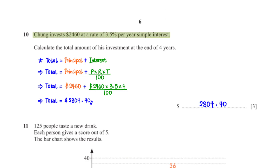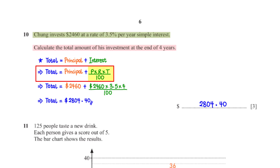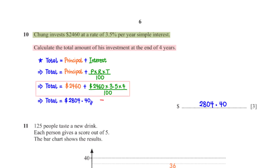Chan invests $2,460 at a rate of 3.5% per year simple interest. Calculate the total amount of his investment at the end of 4 years. The total value of his investment is equal to his principal plus the total interest earned. For simple interest, we compute the total interest using the formula: principal times rate times time divided by 100. The principal is $2,460, the rate is 3.5%, and the time is 4 years. When we type this into the calculator, we get $2,804.40.